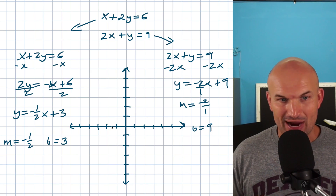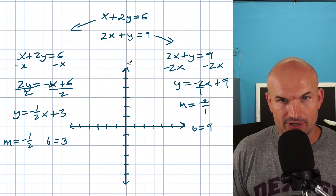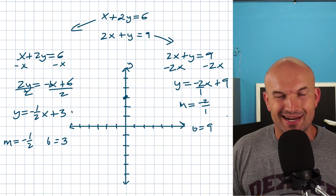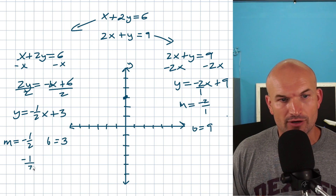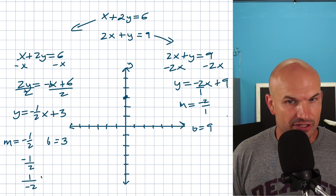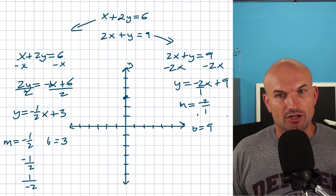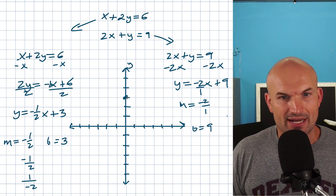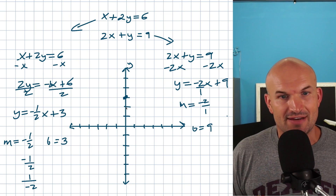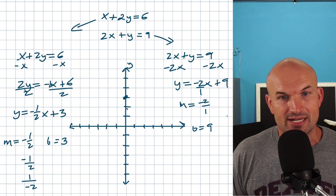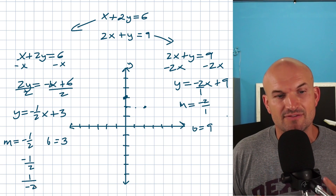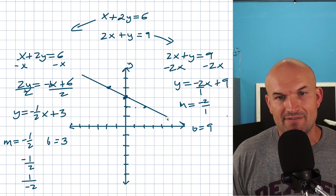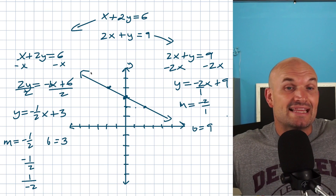Now let's graph. The first equation has a y-intercept at 3, so I'll plot that point. For the slope of negative one-half, it doesn't really matter which direction you start — negative 1 over 2 is the same as 1 over negative 2. I recommend going in both directions: down 1 to the right 2, or up 1 to the left 2. I'll go both ways since I don't know which direction will lead me to the intersection point, and sometimes you need to extend the lines.